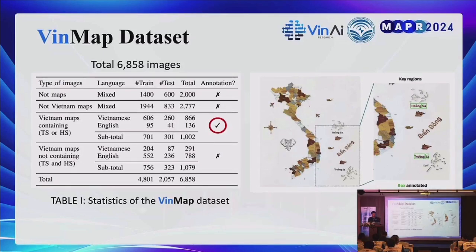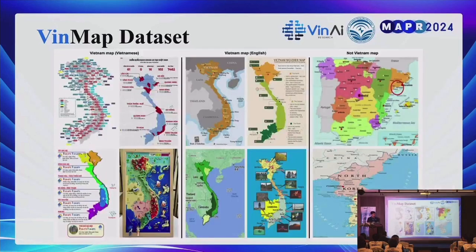We provide detailed bounding box annotations for the set of Vietnam maps containing Trường Sa or Hoàng Sa, marking the text regions for those specific areas. Here we show some illustrations of the dataset. The columns represent Vietnam maps in Vietnamese, Vietnam maps in English, and North Vietnam maps.